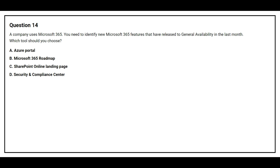Question number 14. A company uses Microsoft 365. You need to identify new Microsoft 365 features that have been released to general availability in the last month. Which tool should you use? Option A: Azure Portal. Option B: Microsoft 365 Roadmap. Option C: SharePoint Online Landing Page. Option D: Security and Compliance Center. The correct answer is Option B, Microsoft 365 Roadmap.